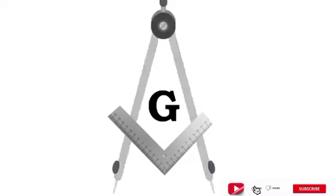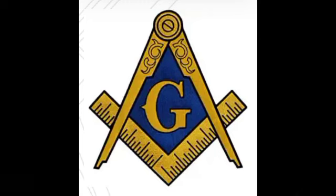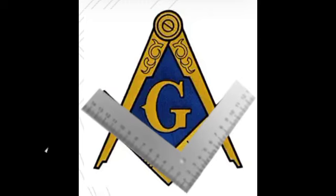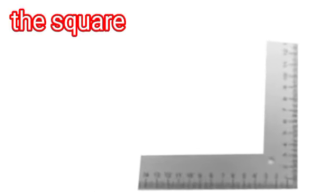To understand the meaning of the whole, it is necessary to break down the significance of each element. The square, or builder's square, is two equal flat-edged metal or wooden arms fixed that form a perfect right angle or 90-degree angle.